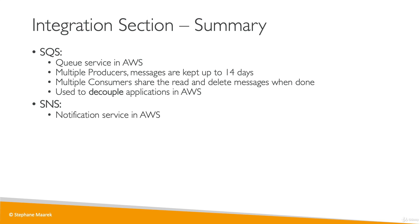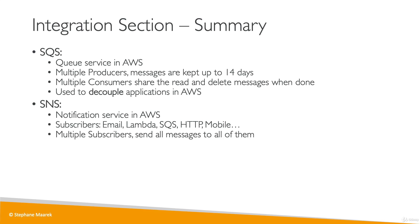SNS is a notification service in AWS, and we have producers and subscribers. Subscribers could be email, Lambda, SQS queues, HTTP, or mobile. If you have multiple subscribers onto one SNS topic, then SNS will send a message to all of them. SNS doesn't retain any messages, so it's not a durable store of messages. It's used for PubSub, for subscribers, for topics, and notifications within AWS.